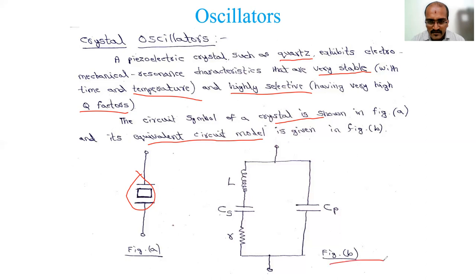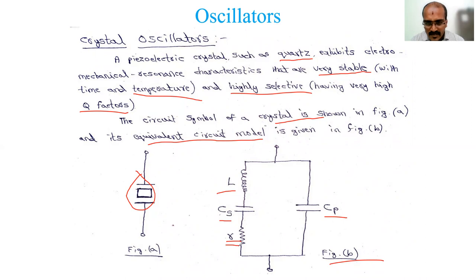The equivalent circuit shown in figure B consists of an inductor L in series with a capacitor Cs, along with a small resistance R, and this series combination is in parallel with another capacitor Cp. Comparing with the Colpitts oscillator which uses C1 and C2, here we use Cs and Cp - the equations will come out the same. The inductor is an additional element, and the resistance is very small so it won't play a major role in finding the frequency, but it contributes to the Q factor.